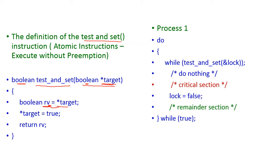After that, the target value will be changed to true — this is very important because by using this only we can protect the critical region, that is the lock will be changed to true. And then we return rv, not target. Many students make an error at this point. We return rv, meaning whatever data was in target before the call is what this method returns.